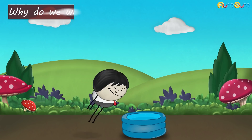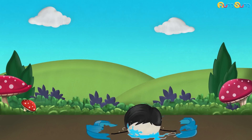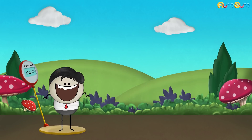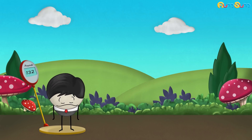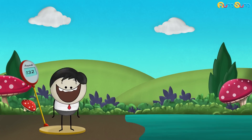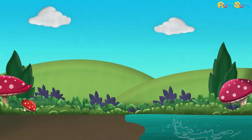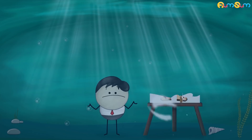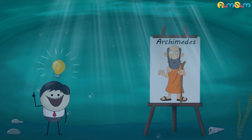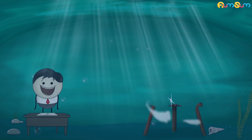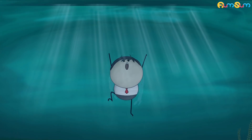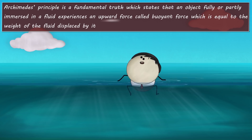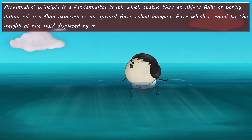Archimedes principle. Why do we weigh less in water? You weigh 132 pounds. Check your weight in water — it is much lesser. The answer to this is based on Archimedes principle. Archimedes principle is a fundamental truth which states that an object fully or partly immersed in a fluid experiences an upward force called buoyant force, which is equal to the weight of the fluid displaced by it.